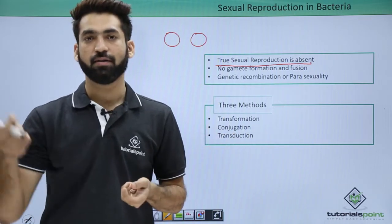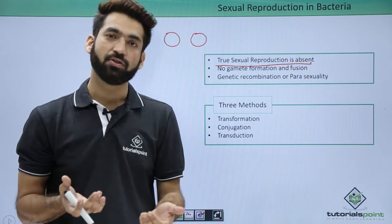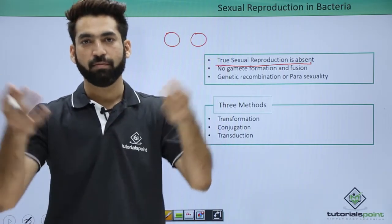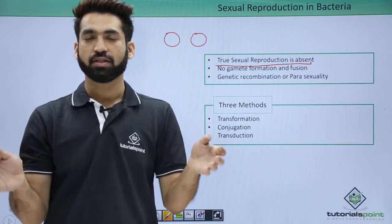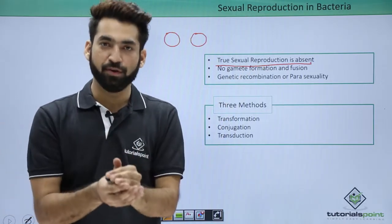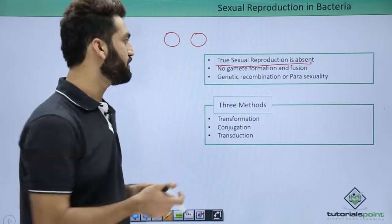One parent forms one gamete, another parent forms another gamete, and both gametes fuse. In bisexual plants, both gametes can form on the same plant and fuse. True sexual reproduction means male and female gametes form and fuse to get a zygote. But here, gamete formation is absent in bacteria.